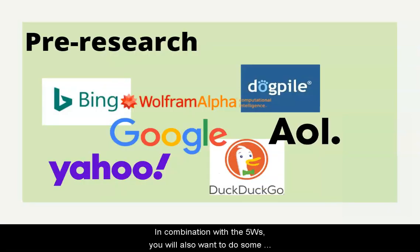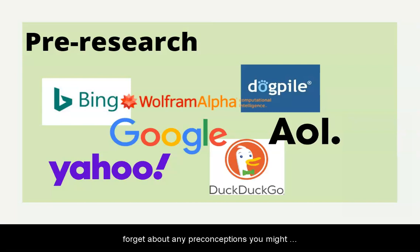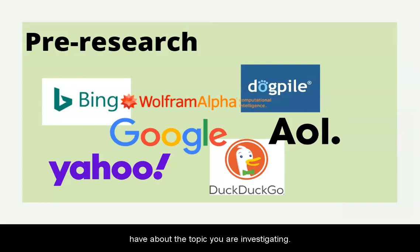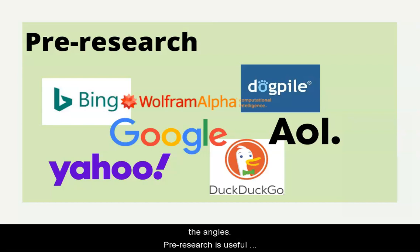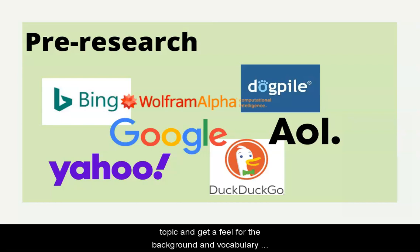In combination with the five W's, you will also want to do some pre-research. This is where it is important to forget about any preconceptions you might have about the topic you are investigating. Don't jump to any conclusions before you've had a chance to examine all the angles. Pre-research is useful because it helps you enter the conversation about your topic and get a feel for the background and vocabulary useful for figuring out where you need to focus your topic, and thus your research.